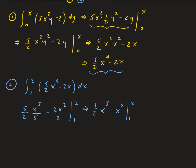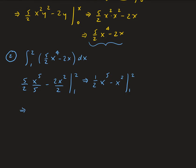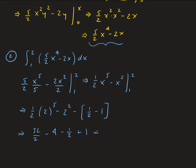Plugging in 2, we get one-half times 2 to the 5th minus 2 squared. Then plugging in 1, we get one-half minus 1. So this gives us 32 over 2 minus 4 minus one-half plus 1. We can write 4 as 8 over 2, so we have 32 over 2 minus 8 over 2 minus one-half plus 2 over 2.